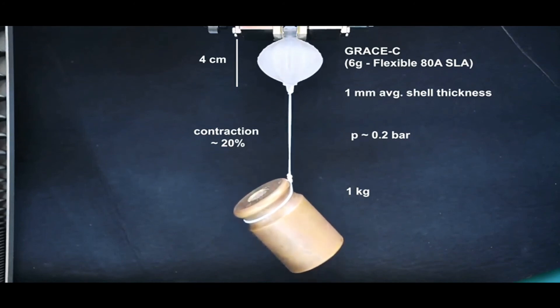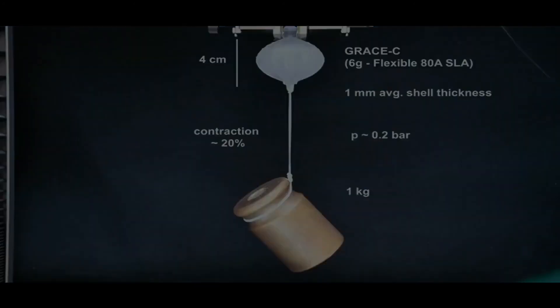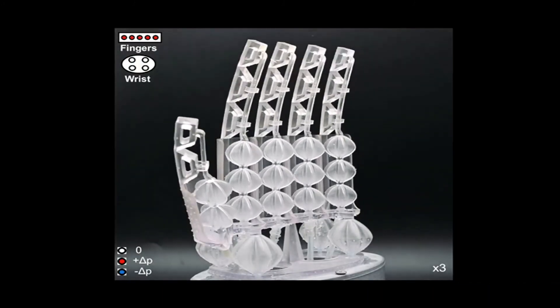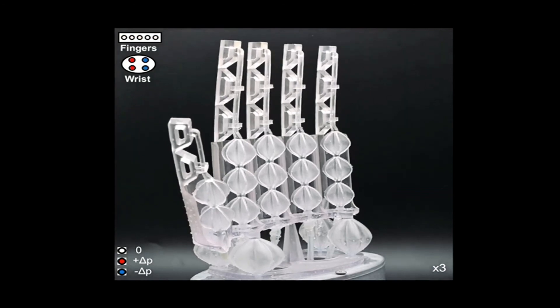They also built a robot hand sized to approximate a human hand using 18 different sized actuators. Testing showed it capable of bending its fingers, rotating at the wrist, and twisting at its palm.